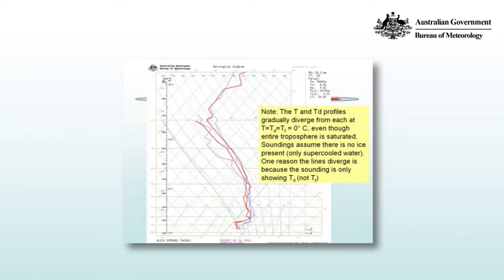Here's a similar point illustrated with a different sonde. The temperature and dewpoint temperature profiles gradually diverge from each other even though the entire troposphere is saturated. Remember that the skew-T log-P uses pseudo-adiabats that ignore ice and instead account for supercooled water. The sonde itself only shows the dewpoint temperature, not the frost point temperature, so ice is explicitly ignored. We always need to remember that ice formation starts above 0 degrees Celsius in the atmosphere and forms efficiently around minus 15 to minus 20 degrees. So if you think there's high-level ice cloud, it's quite possible there is, and you should confirm that with a satellite image.